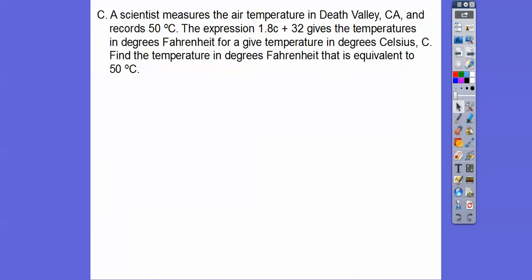Let's do one application problem. A scientist measures the air temperature in Death Valley, California, and records it to be 50 degrees Celsius. The expression 1.8C + 32 gives the temperature in degrees Fahrenheit for a given temperature in degrees Celsius. Find the temperature in degrees Fahrenheit that is equivalent to 50 degrees Celsius. So we're going to substitute in C equals 50 into this expression.